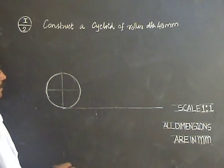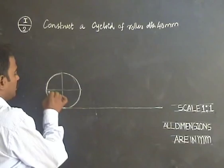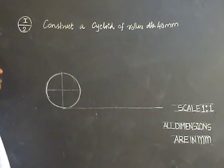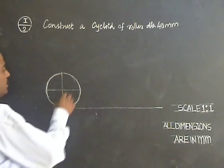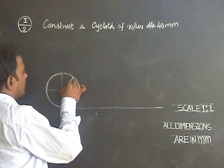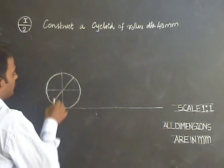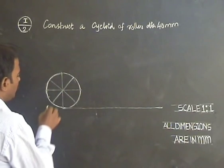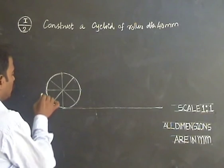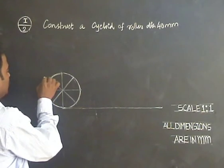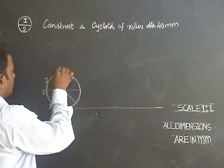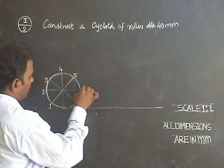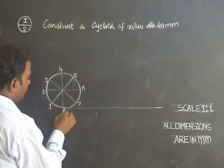Construction of cycloid starts like this. First, draw the circle of required radius. Divide the circle into 8 equal parts. Name them as 1, 2, 3, 4, 5, 6, 7, 8.